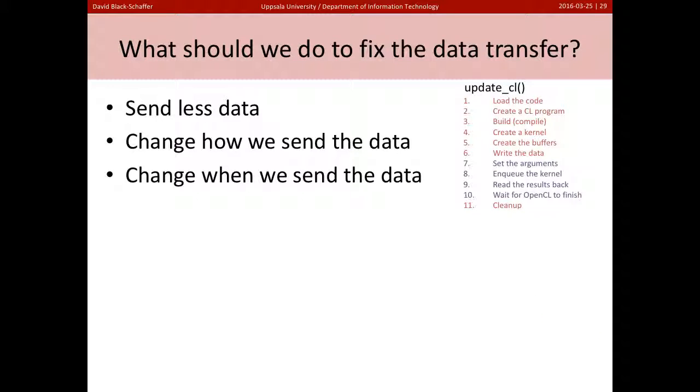So what should we do to fix the data transfer? Remember, this is the code we've done. We've replaced update_CL in our inner loop with code that goes through and does all of this stuff. So how can we fix the data transfer? Well, can we send less data? Do we need the data on every iteration? Do we need to write the data to the GPU, or can we keep it there? Could we change how to send the data?